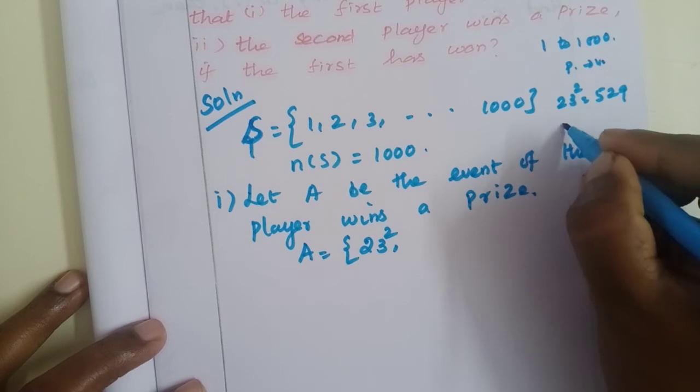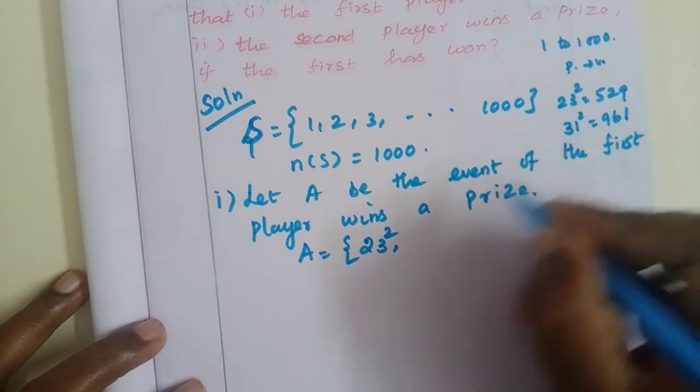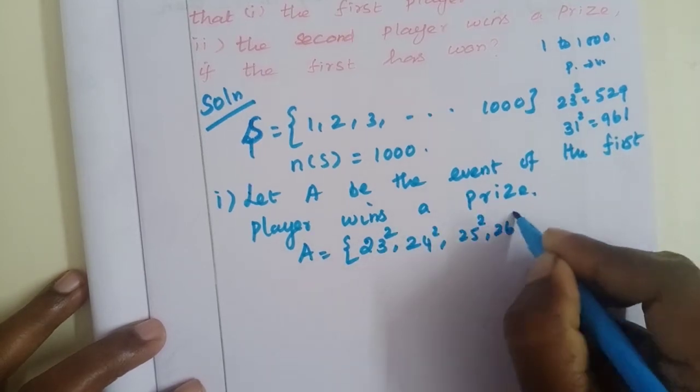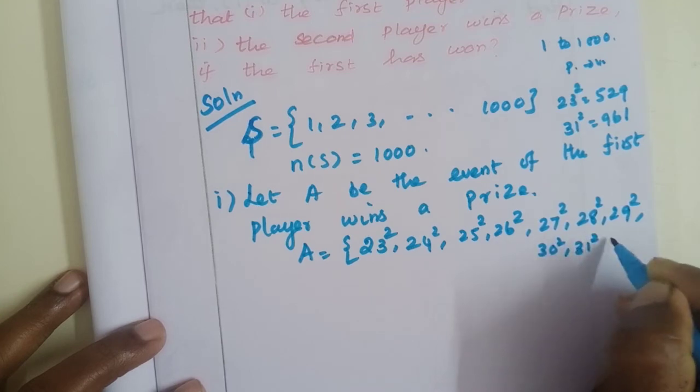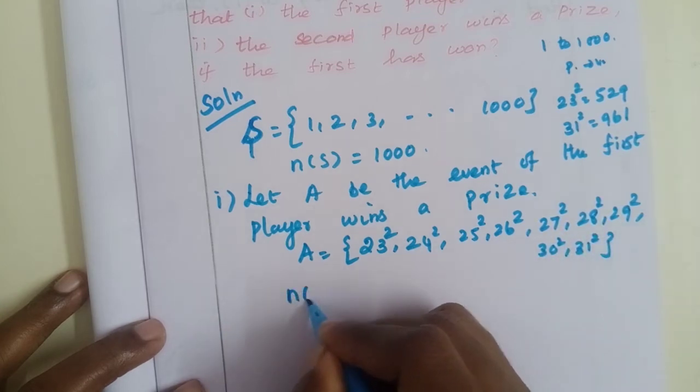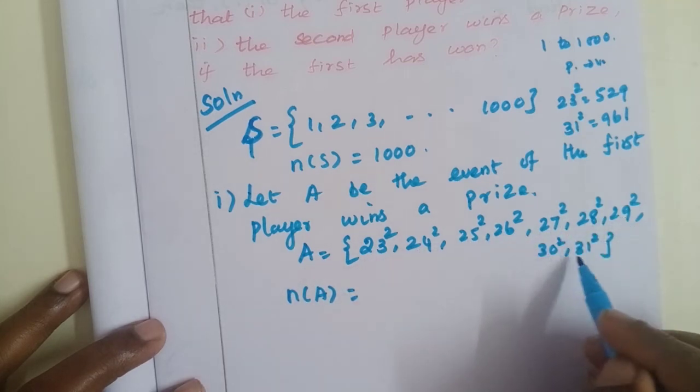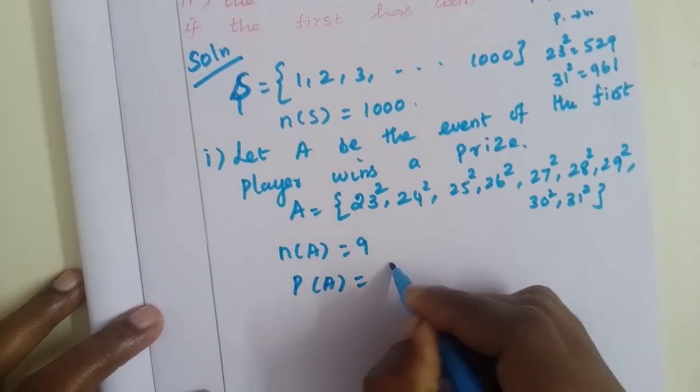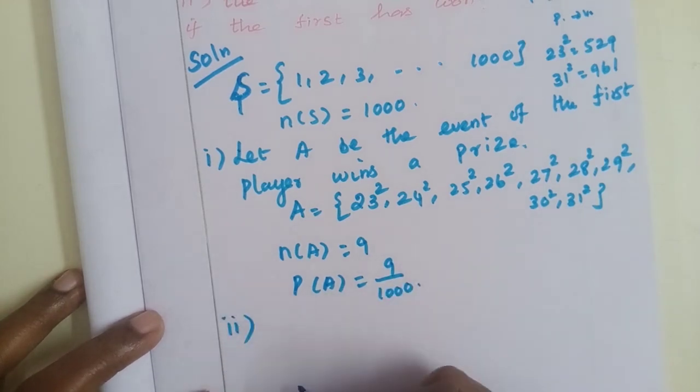The sample space is 1 to 1000, so n(S) = 1000. For perfect squares above 500, we need to find how many there are. The perfect squares above 500 go from 23² up to 31², which gives us 9 favorable outcomes. So n(A) = 9, and P(A) = 9/1000.